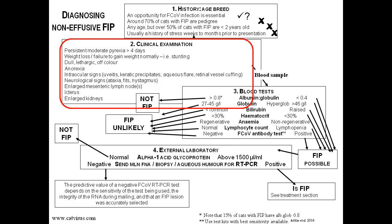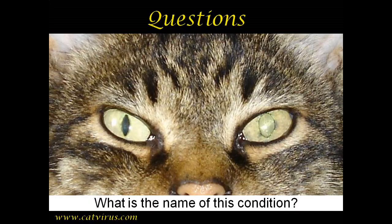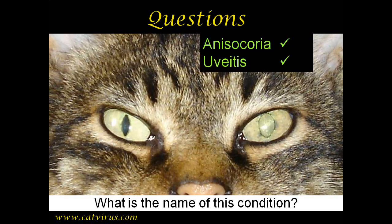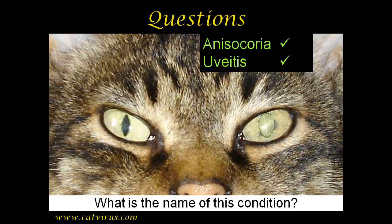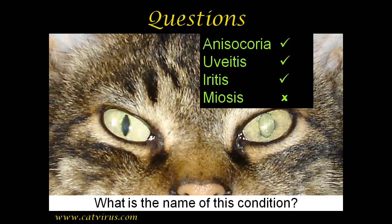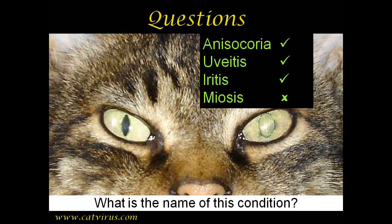In part one of this video series we asked you what is the name of this condition, and there are a number of possible correct answers. Anisocoria — the pupils are uneven. Uveitis or iritis — inflammation of the iris. Some veterinarians answered meiosis, concluding that the pupil of the right eye was abnormally constricted. This is an important point because we want to know whether we're dealing with an intraocular condition or a possible neurological one. Meiosis can be caused by uveitis as well as neurological conditions, but it was the left eye that was affected, not the right, so meiosis would be an incorrect answer on this occasion.